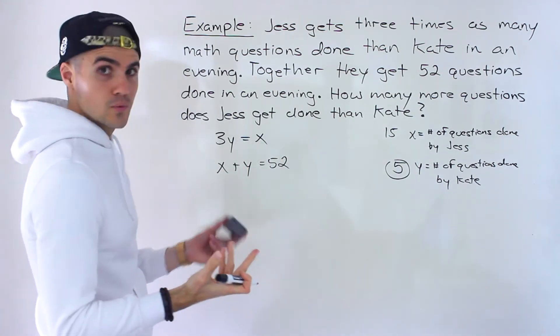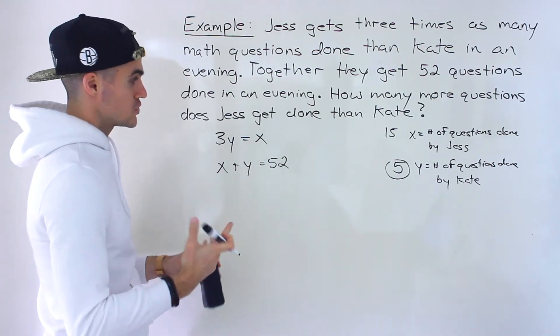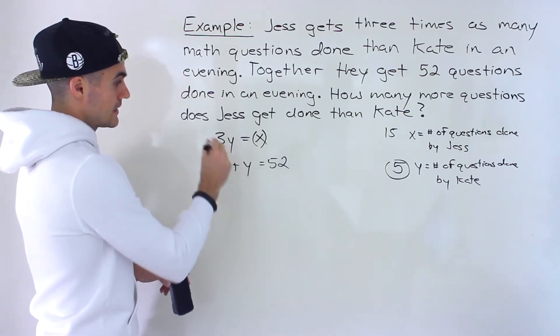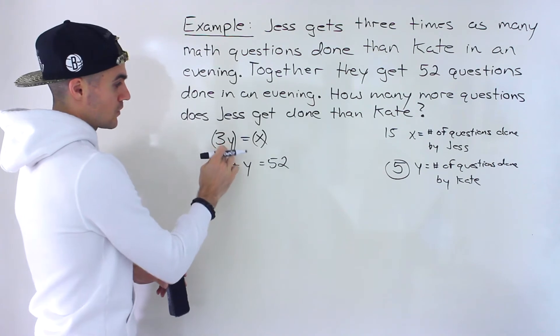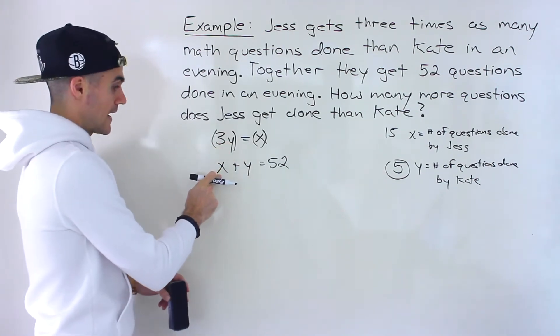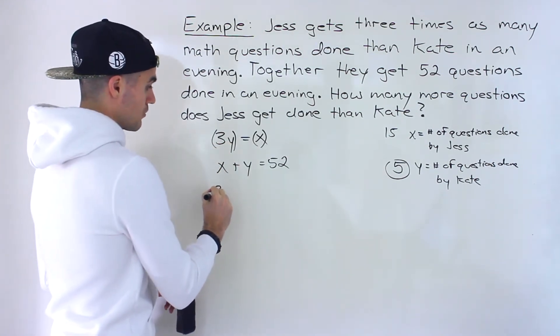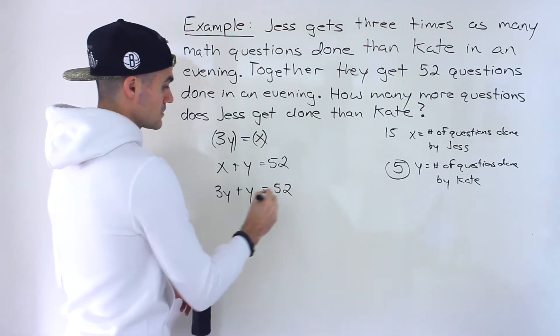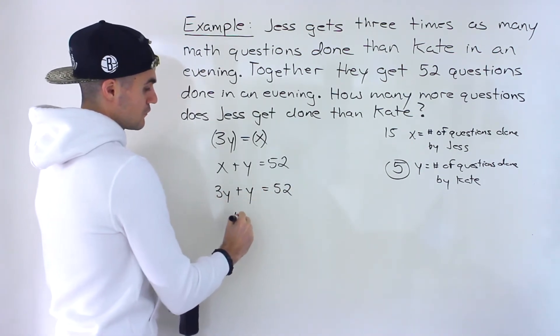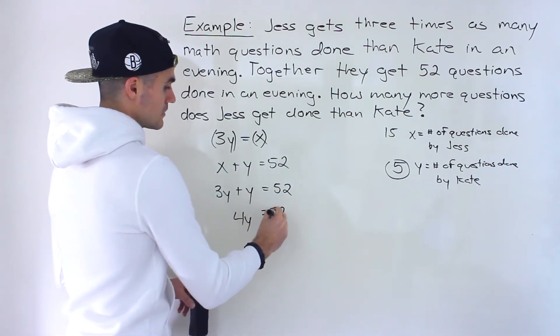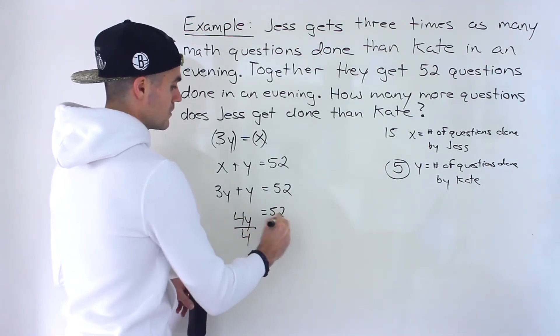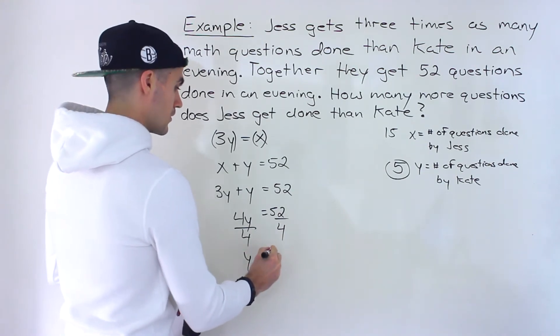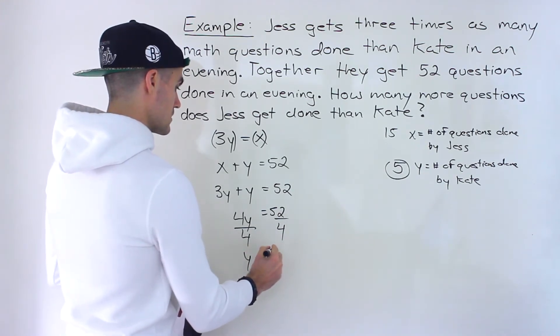And now we have two equations, two unknowns we could solve. And notice that the x is already isolated. So what we can do is we could take this 3y, plug it in for that x right there. So we would end up with 3y plus y is equal to 52. These are like terms, so that would be 4y is equal to 52, divide by 4. Y would equal 13.